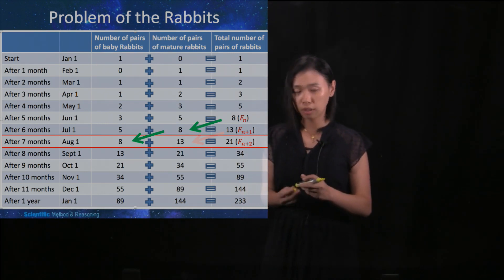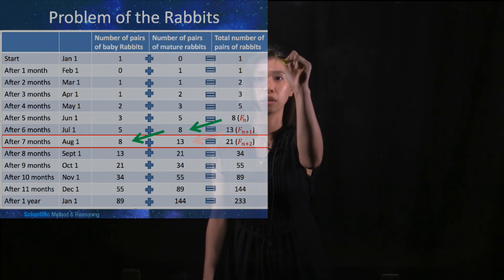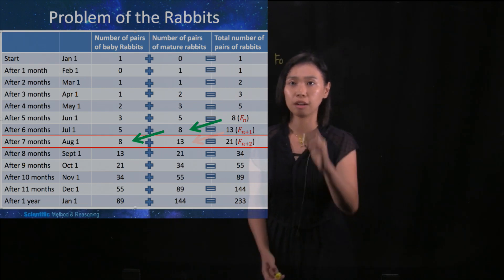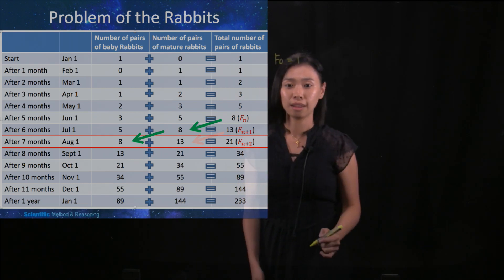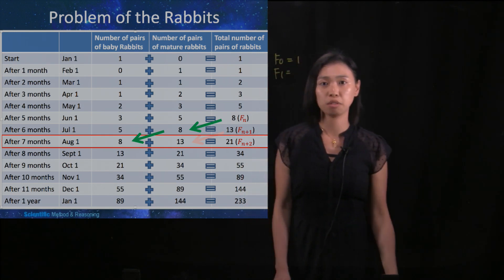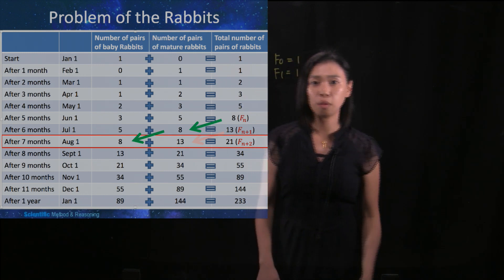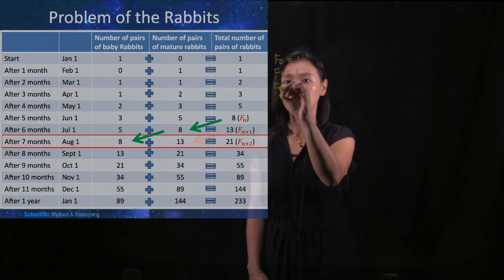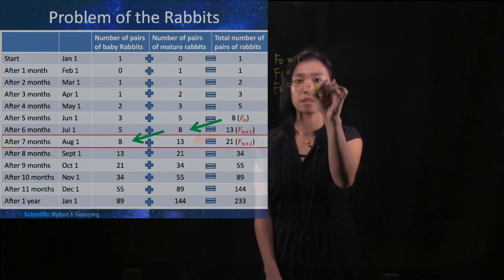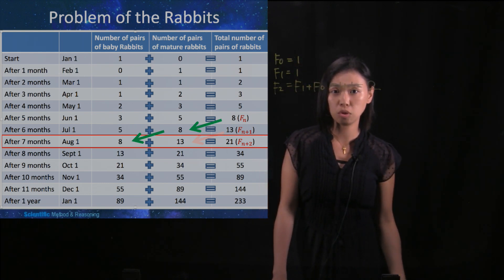If we denote the first term 1 to be F0, that means the total number of pairs of rabbits at the start is 1. And then we denote F1 to be the total number of pairs of rabbits after one month, it is 1 as well. Then we notice that F2, the total number of pairs of rabbits after two months, is F1 plus F0, which is 1 plus 1, which is 2.